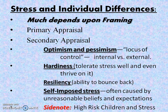Optimists tend to appraise events as challenges rather than threats, remain hopeful when the odds are not in their favor, focus on what they can do to improve a situation, and take pleasure and pride in what they accomplish rather than dwelling on failures. Pessimists are obviously the opposite. Optimism and pessimism have in turn been related to your locus of control — the idea of how much you think you're in control of your own situation and life.